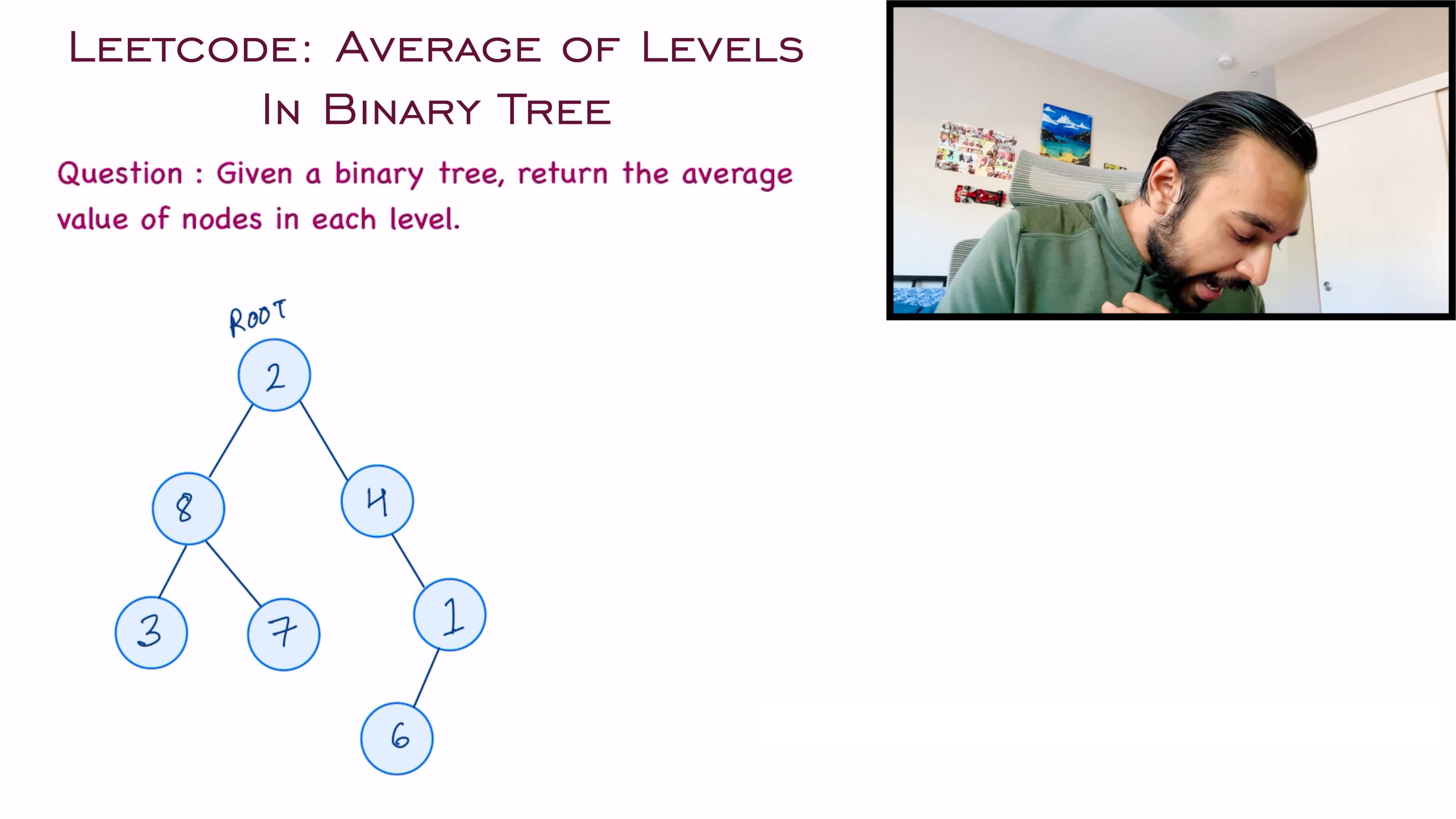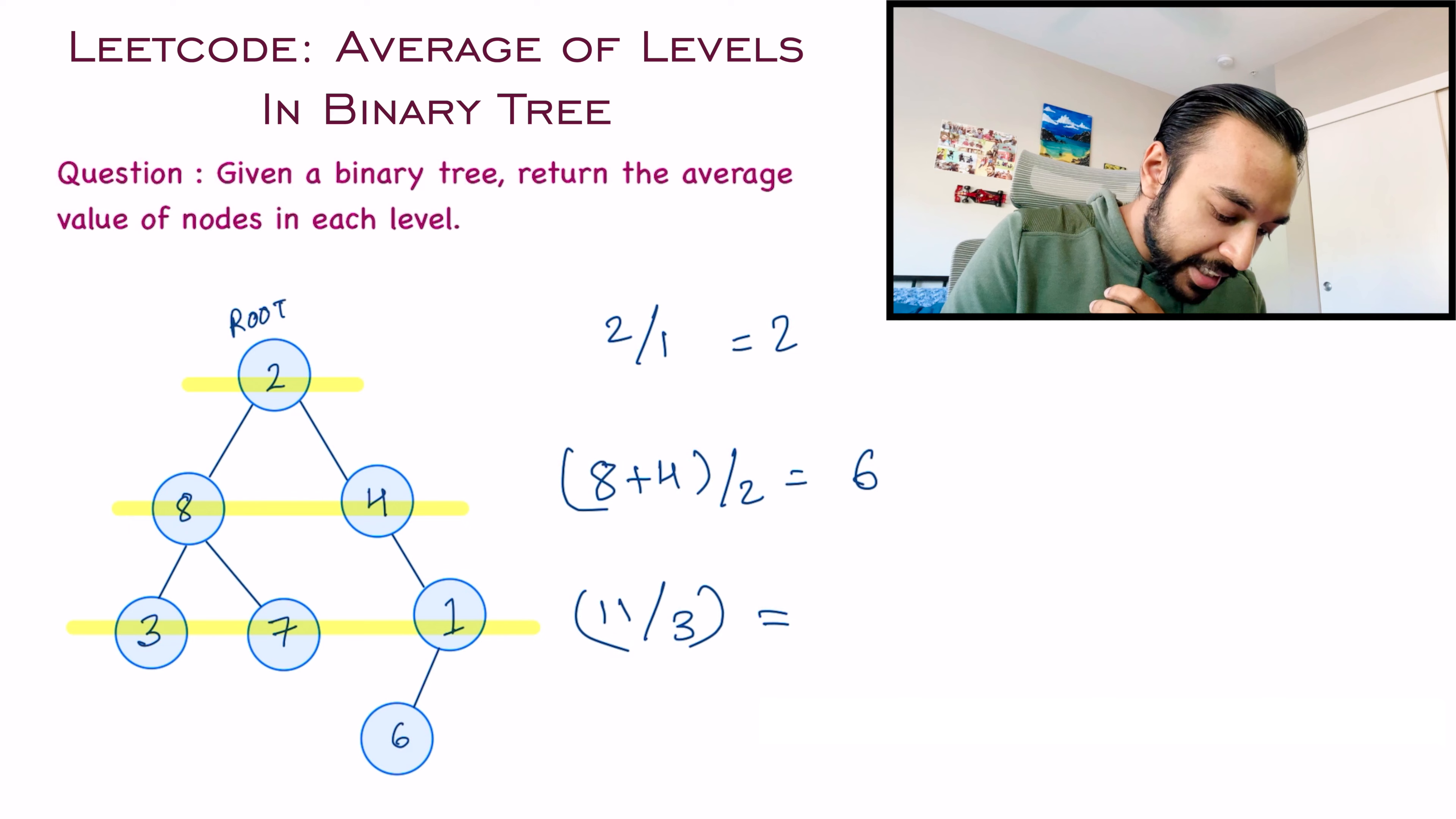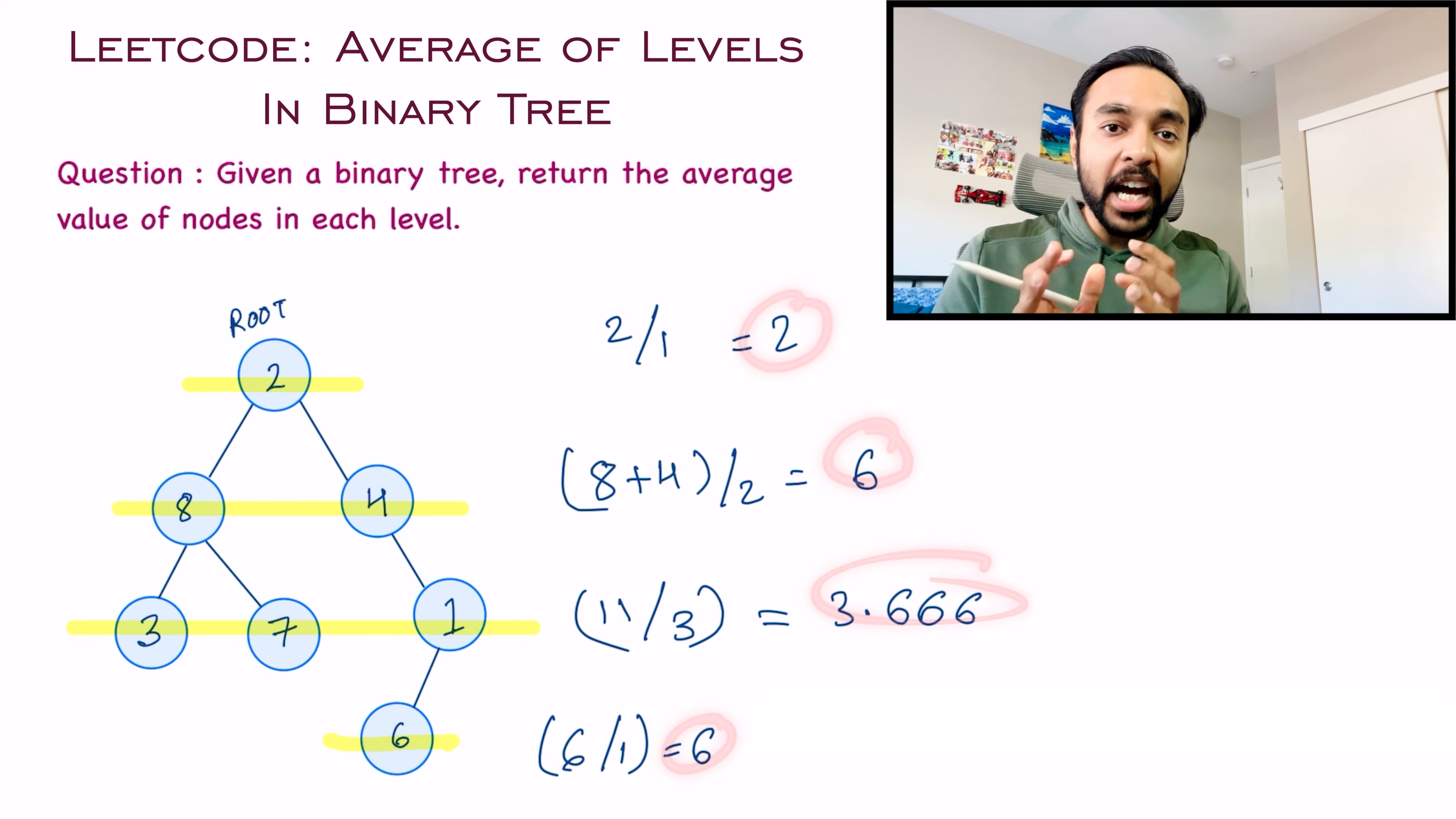And what you need to tell me is what is the average value of the integers at each of these levels. So for example, at level one, you only have one value. So the average value would be two divided by one, and that is two. If we go on to level two, you have two elements, eight and four. So the average value would be eight plus four divided by two, and that will give you six. Similarly, you have the third level and the values are three, seven and one. So that would be 11 divided by three, and that is equal to 3.6. And last, you only have one node and that is six. So the average value for level four would be six divided by one, and that is equal to six.